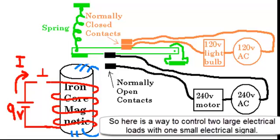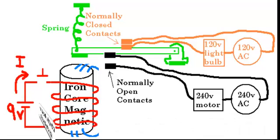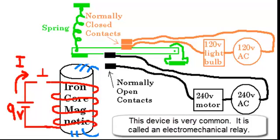So here is a way to control two large electrical loads with one small electrical signal. This device is very common. It's called an electromechanical relay.